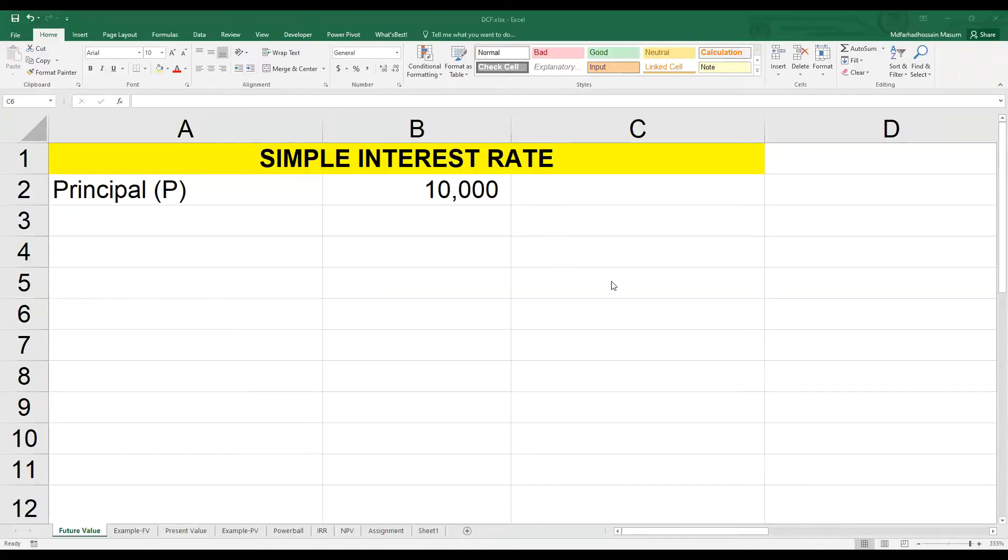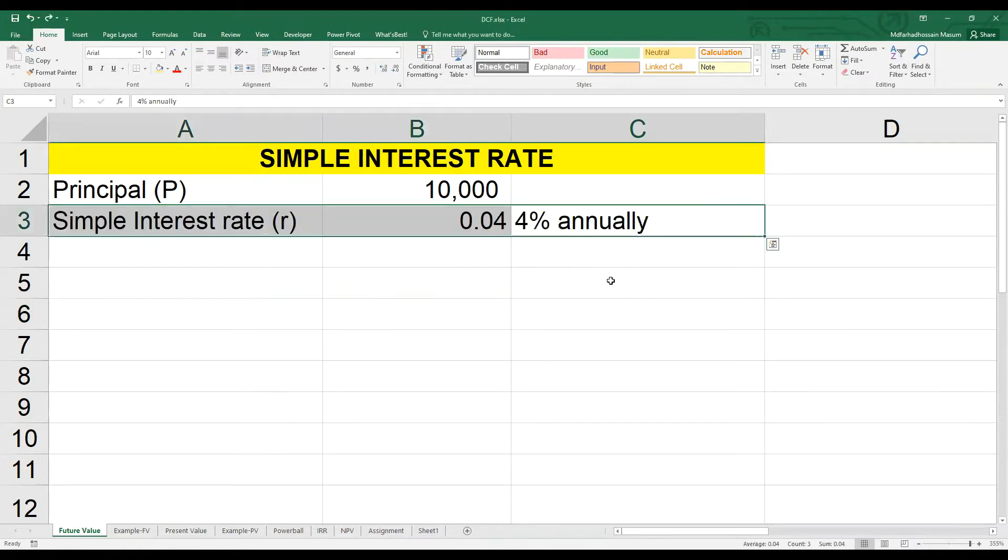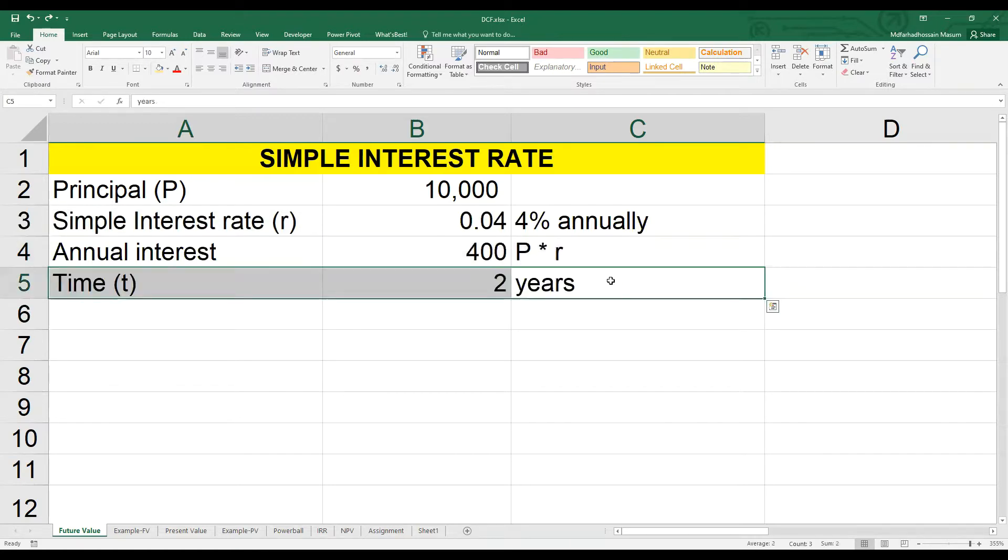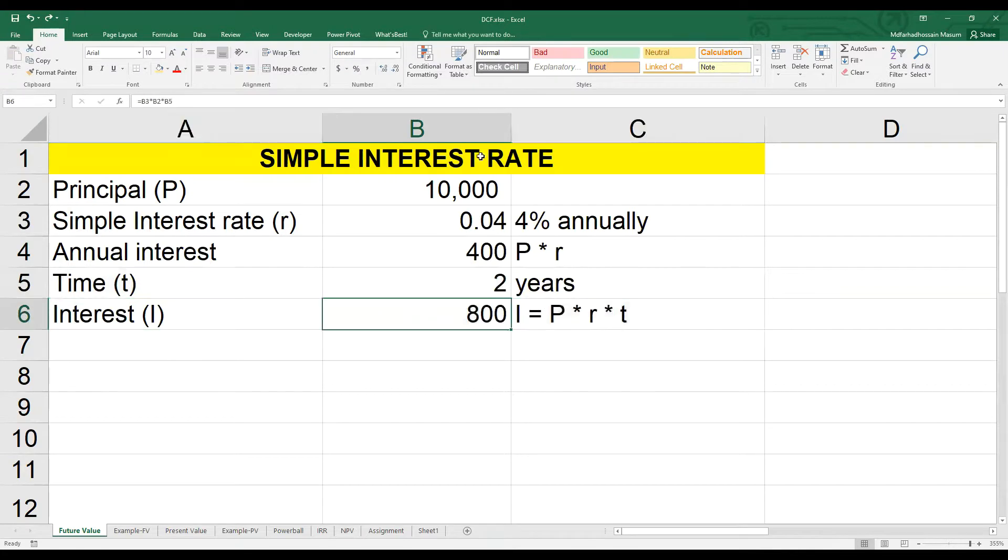That will depend on interest rate. If I put $10,000, that is called my principal, capital P. And the money is growing at a simple annual interest rate of 4%, we call it R. Then every year I will get $400, which is P multiplied by R. Then in two years I will get $800 in interest. Just multiply P, R and T.